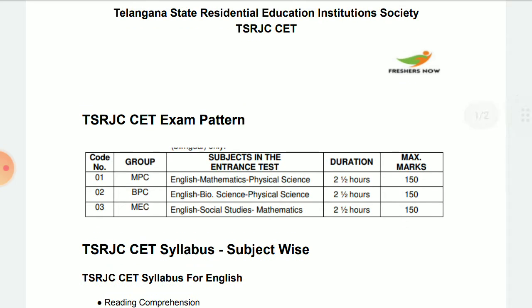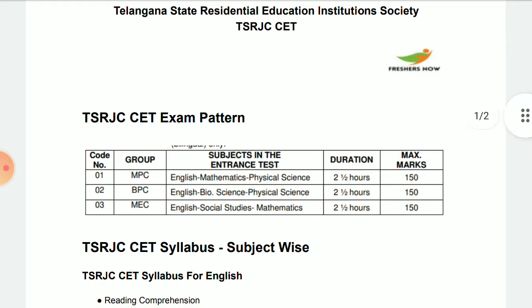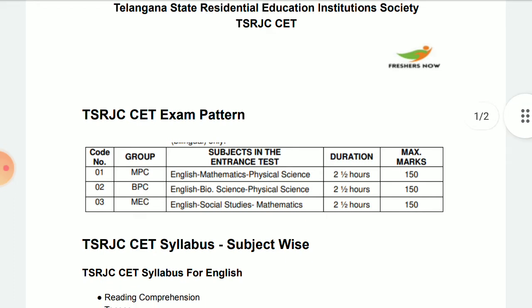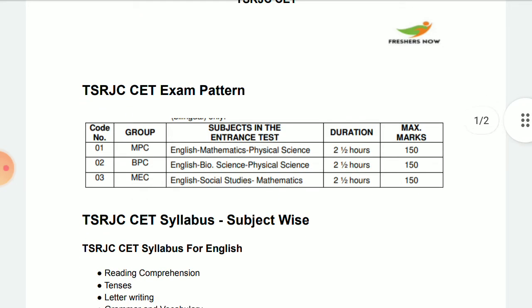BiPC includes English, Bioscience, and Physical Science. Physical Science includes Chemistry and Physics. Here also you will get two and a half hours and 150 marks, with 50 marks for each subject.